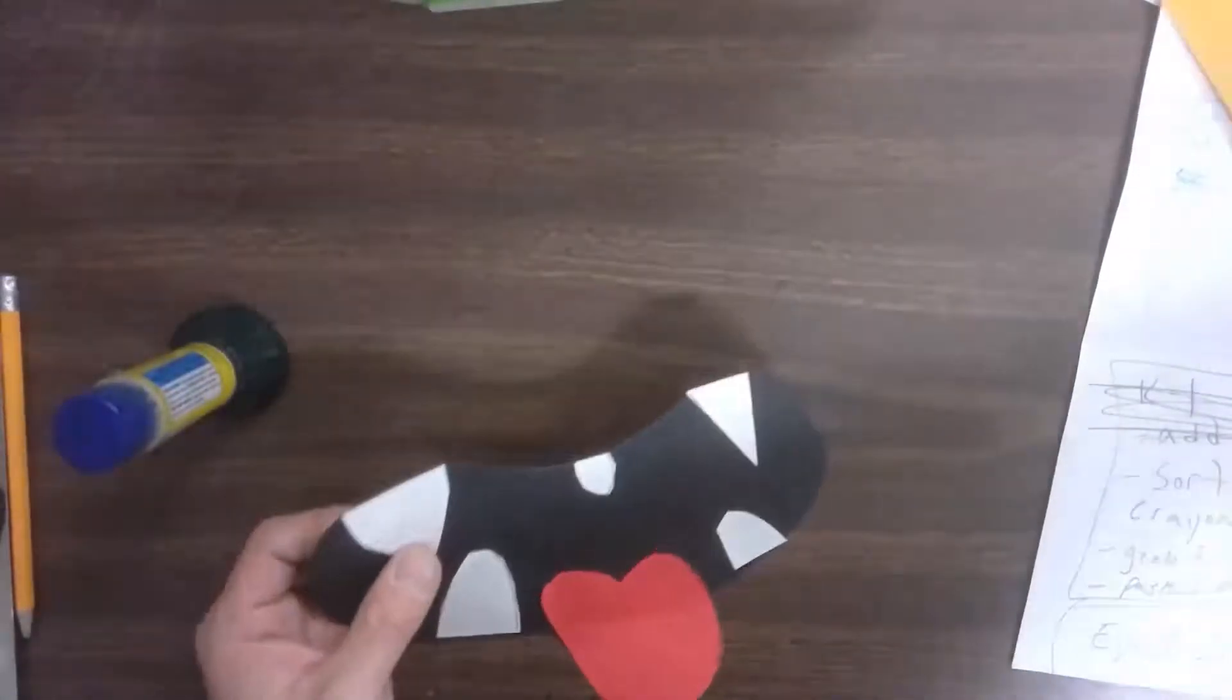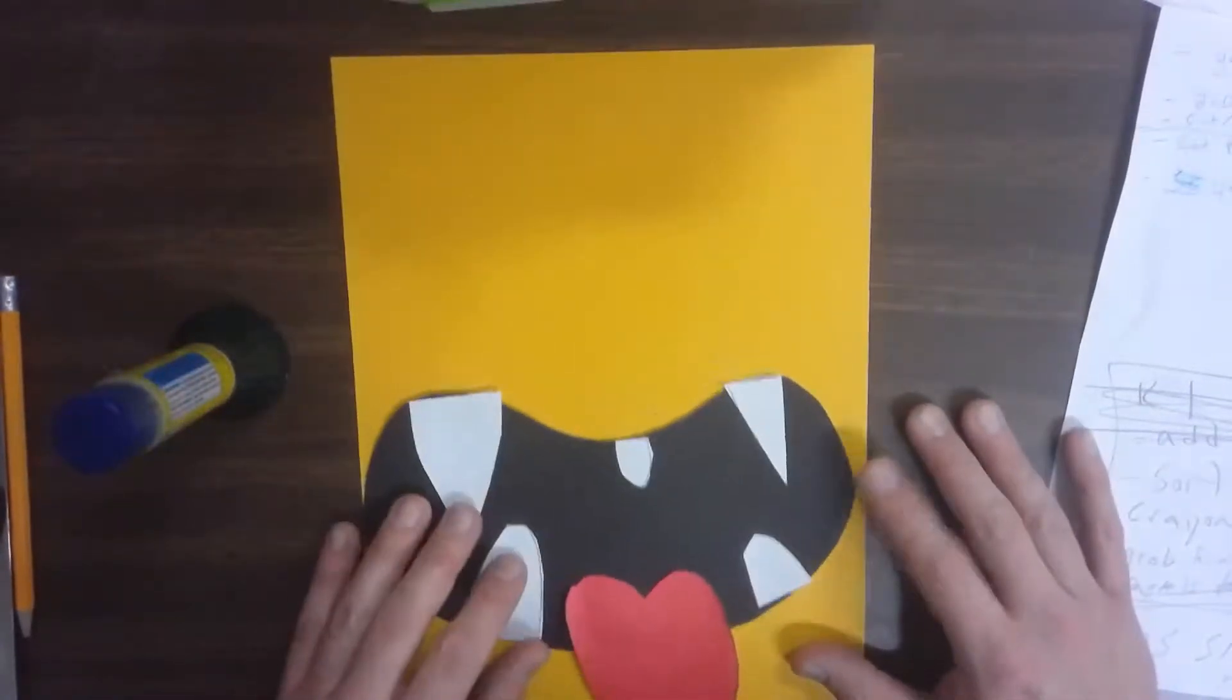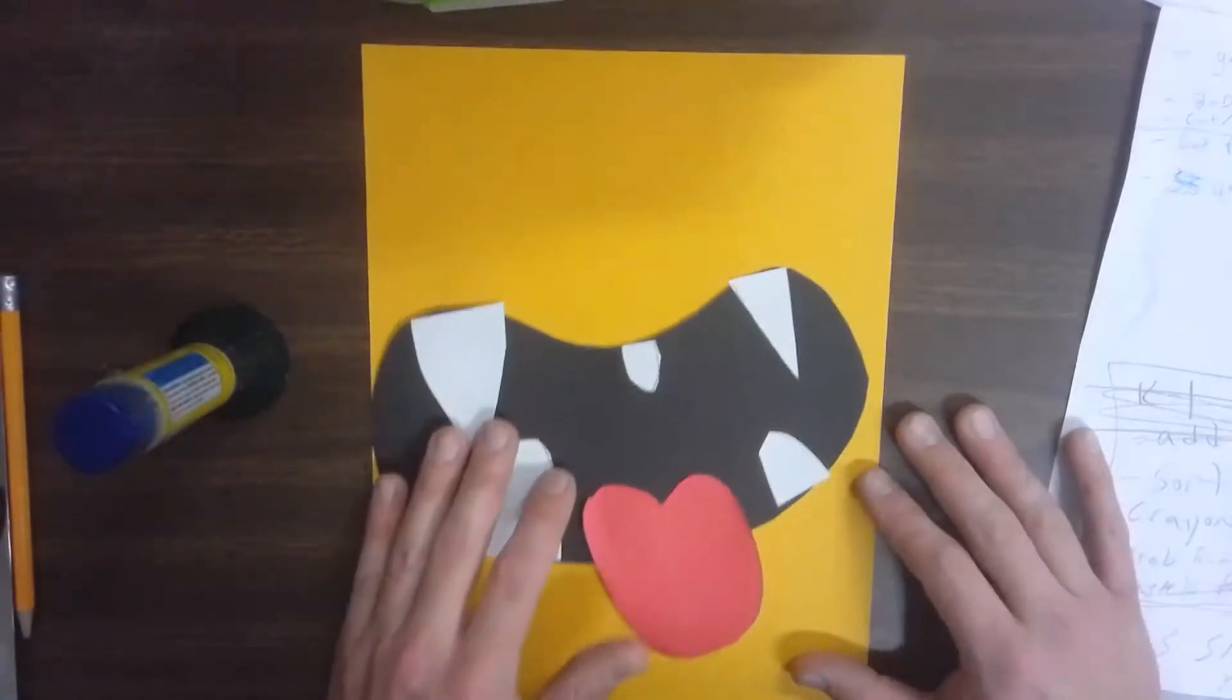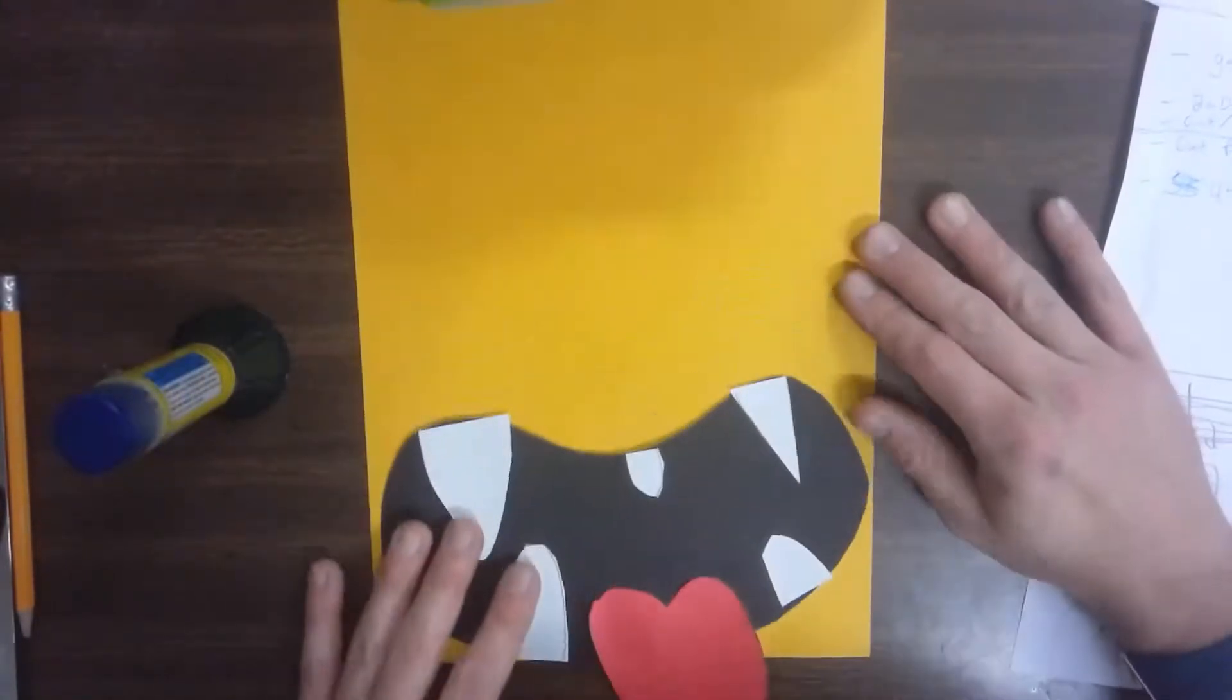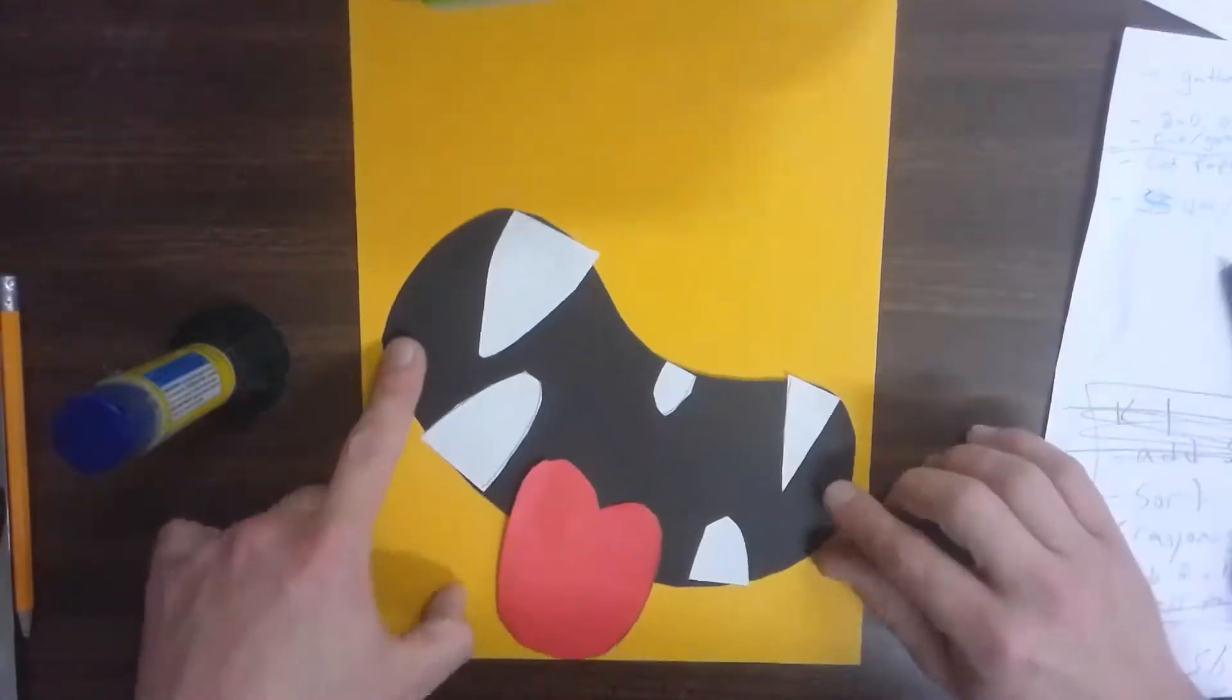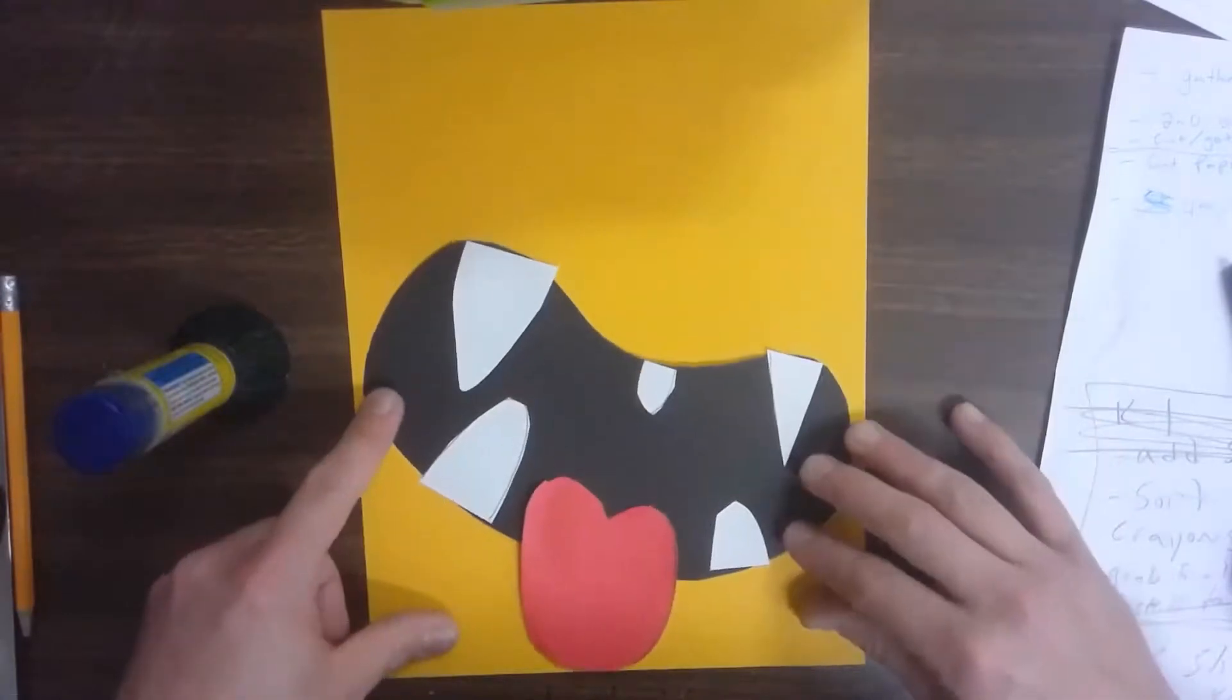This is the mouth, so I want to glue it where the mouth should be. Probably not way up here, but I'm going to go kind of towards the middle or the bottom. It's okay if you even want the tongue hanging off the paper. I could put it sideways, straight—you decide. I kind of like mine almost at an angle like that.